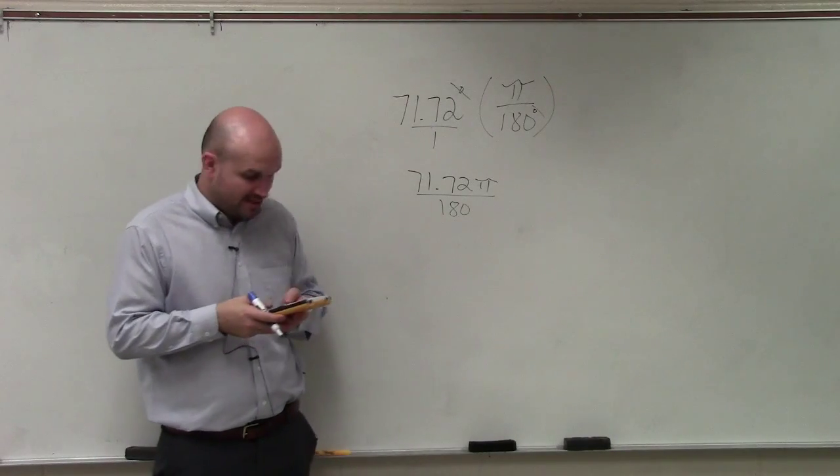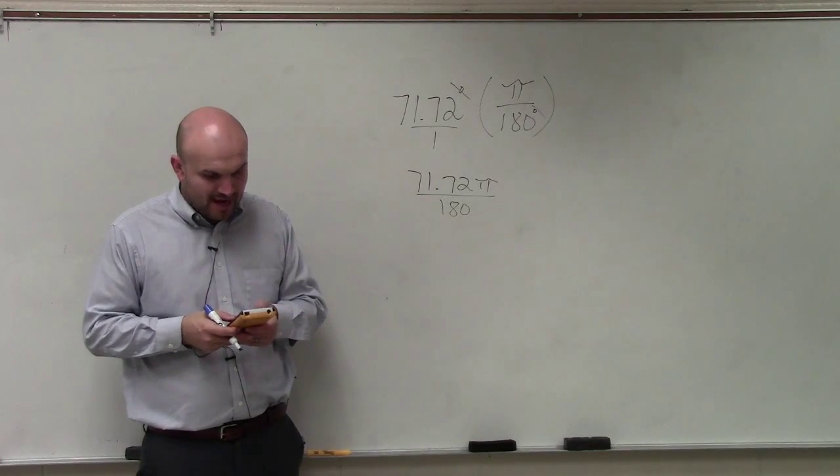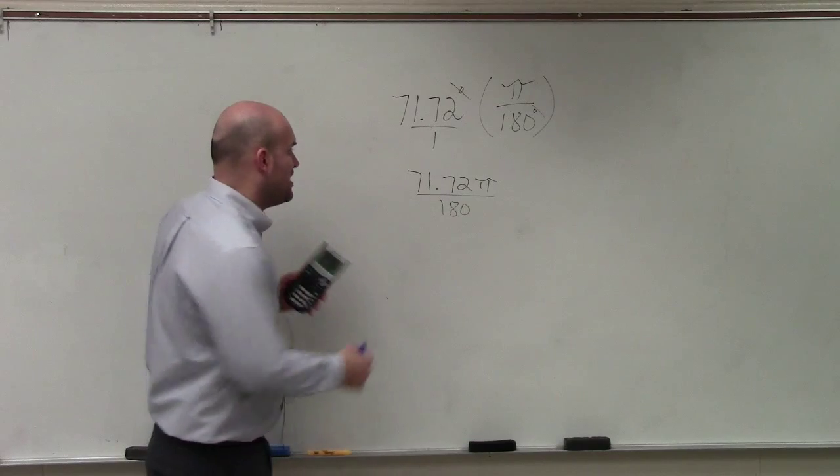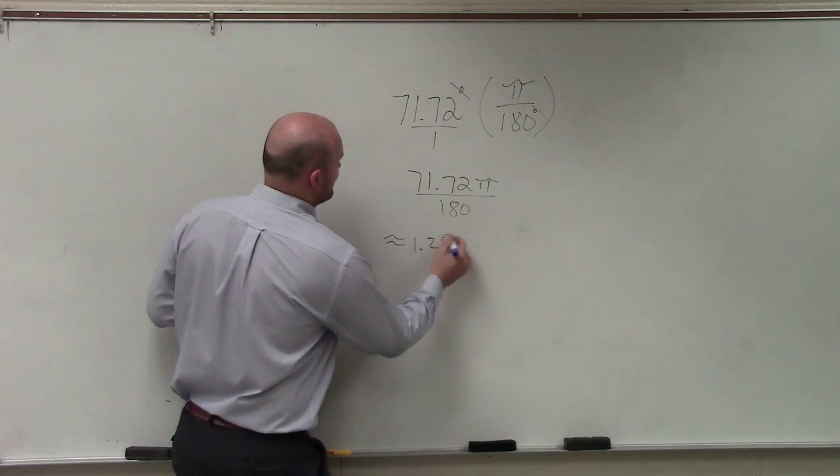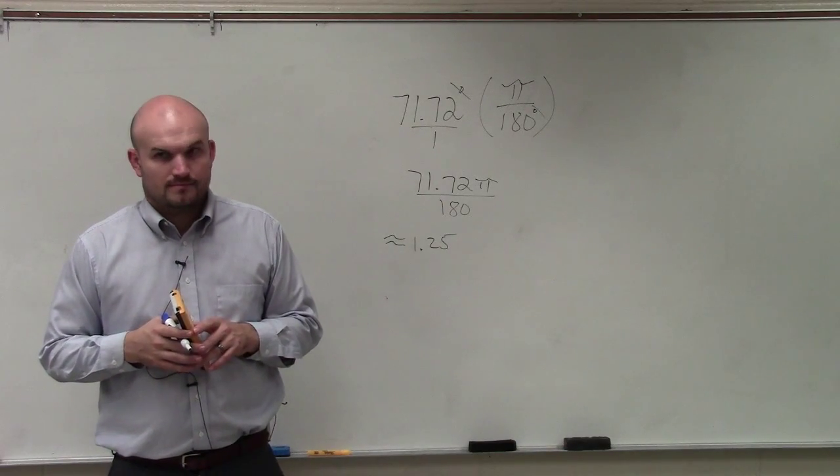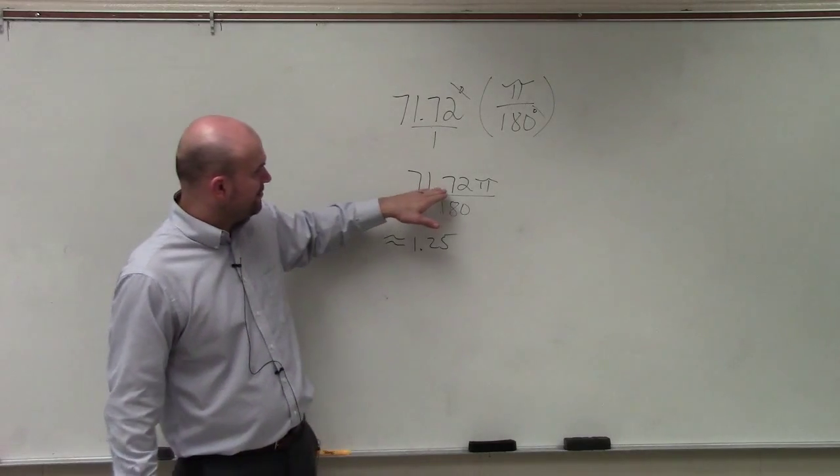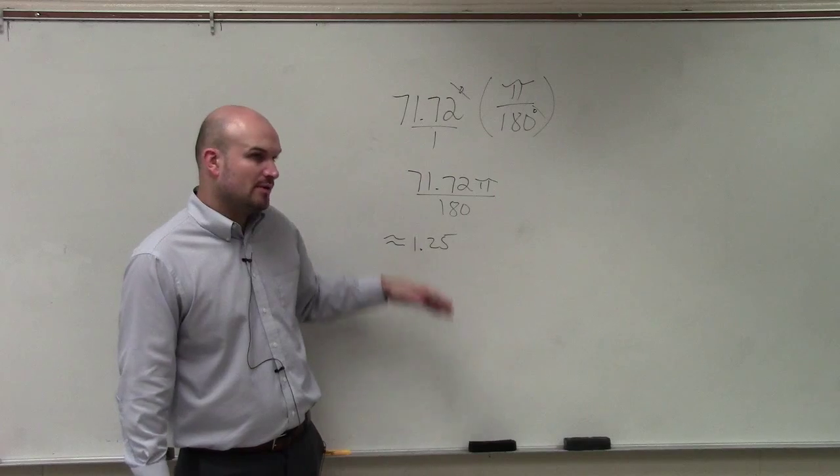Or if we wanted to approximate it, we could do 71.72 times π and then divide that by 180, which is approximately 1.25 radians. I just multiplied 71.72 times π divided by 180, and it gave me 1.125.